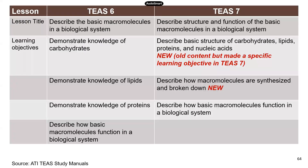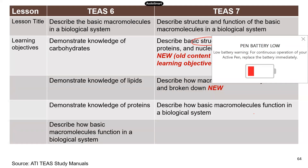As usual, this is a comparison between learning objectives between the two versions of TEAS. In TEAS 6, it's about demonstrating knowledge of all four different macromolecules and their functions. In TEAS 7, it hasn't changed that much — you still need to know the basic knowledge about all these macromolecules, including their basic structure and function.